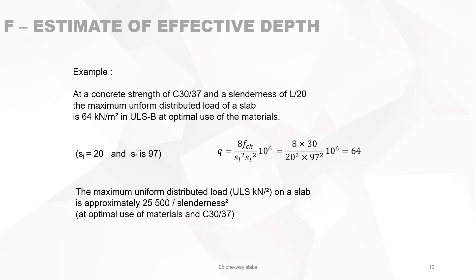You can also rework the formula and express it another way: the maximum uniform distributed load in ULS in kilonewton per square meter on a slab is approximately 25,500 divided by the square of the slenderness, at optimal use of materials.